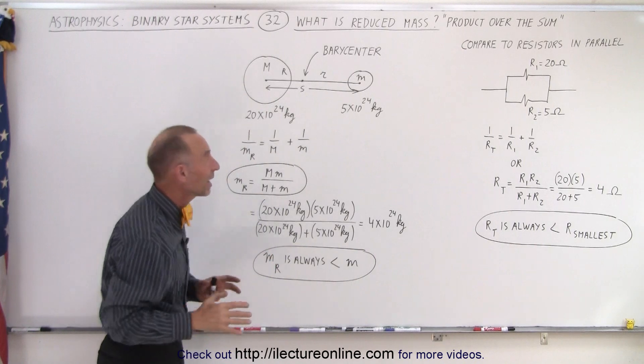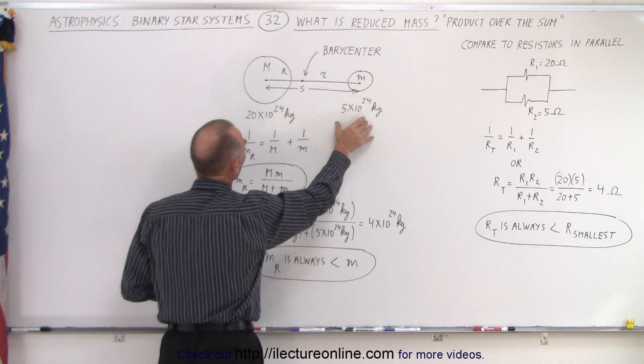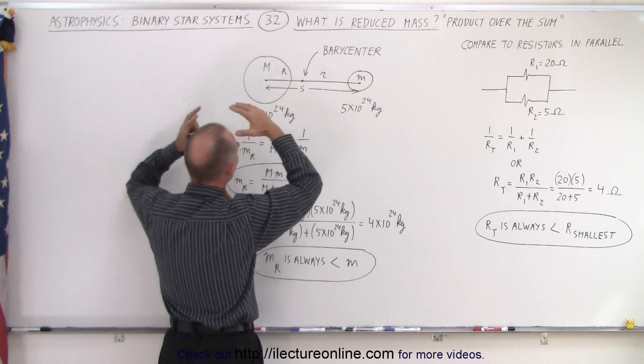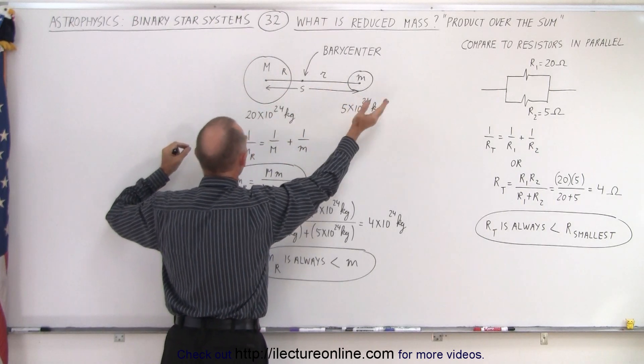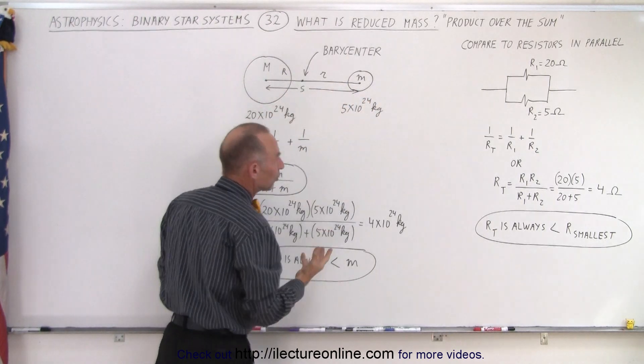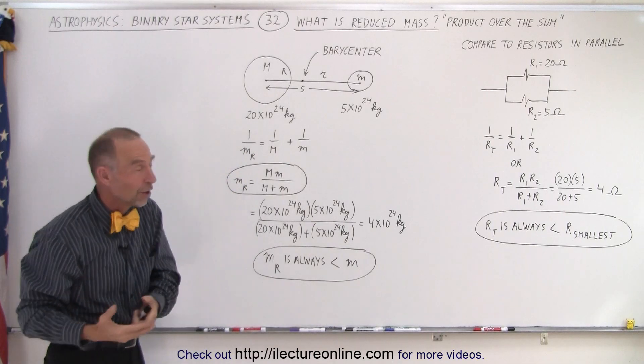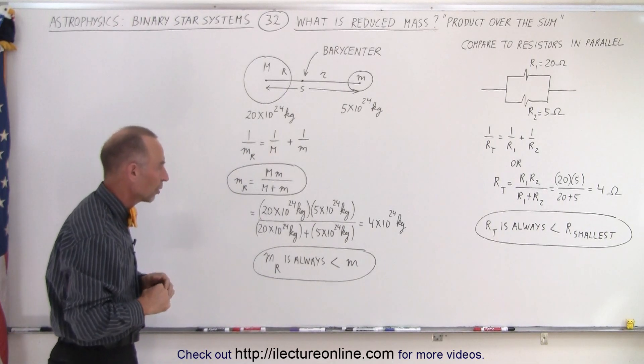That's of course always the case when the small mass is not that much smaller than the large mass. If the large mass is huge and the small mass is very small we no longer need to do that. The reduced mass will be very close to the actual mass of the smaller object.